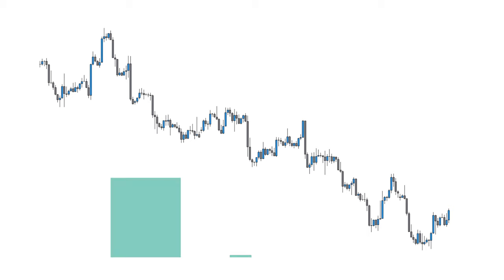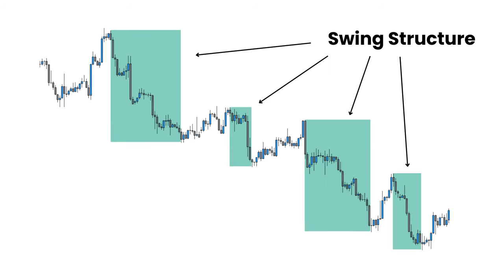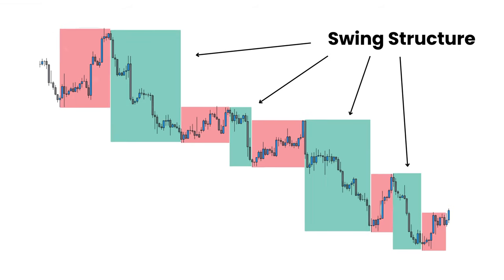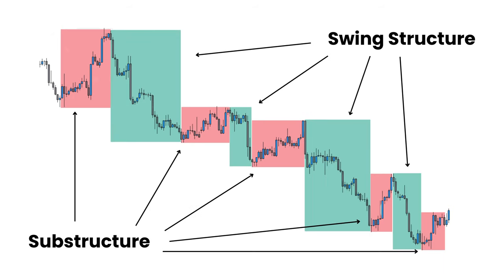And this leads me on to the second point: substructure versus swing structure. The waves we just drew out are swing structure and the small moves that happen within are substructure. It is possible to take advantage of the smaller substructure moves as they are valid trends inside of the larger trend itself.